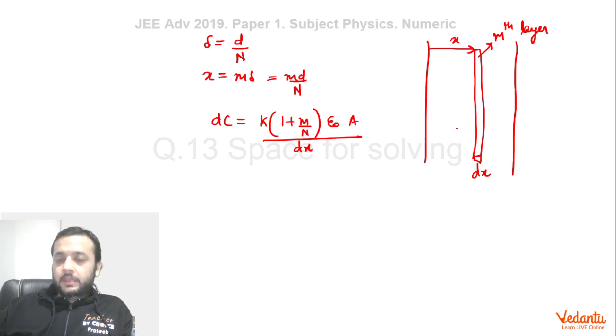Now all such layers are in series, so we can find 1/C_eq equals the integral of 1/dC. This becomes dx/(K(1 + m/N)·ε₀A). From here, can I write x/d? If you look at this expression, m/N will be x/d, and this is ε₀A. The value of x will go from 0 to d—this whole separation is d.